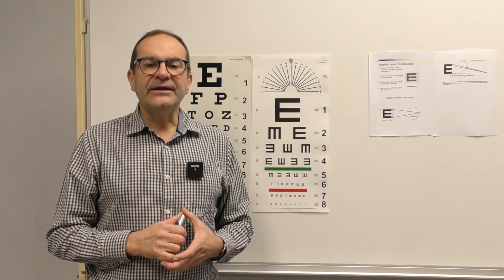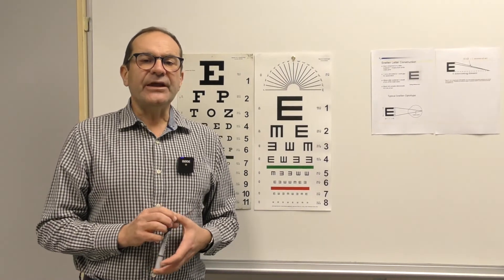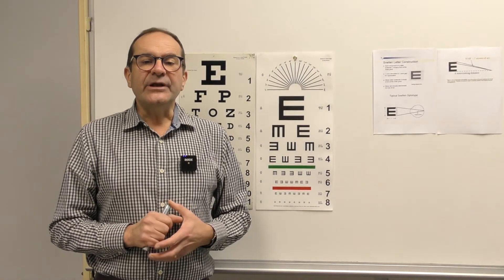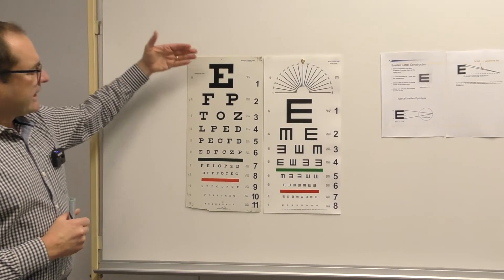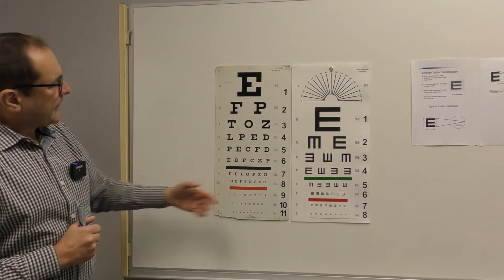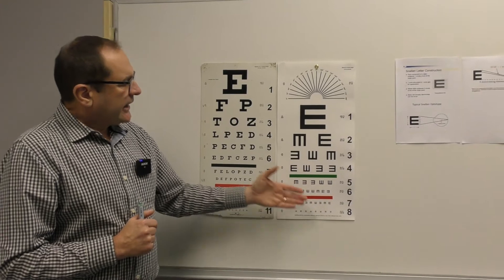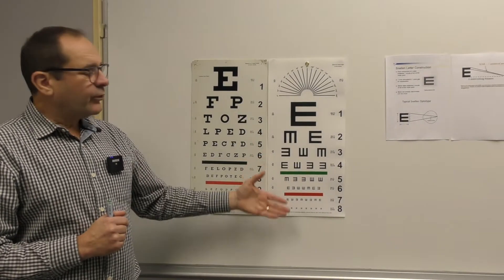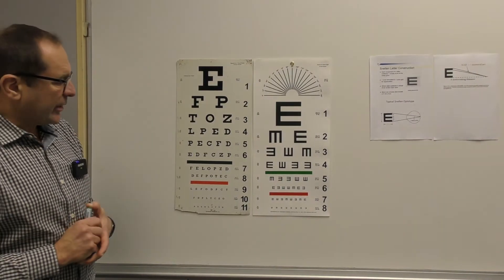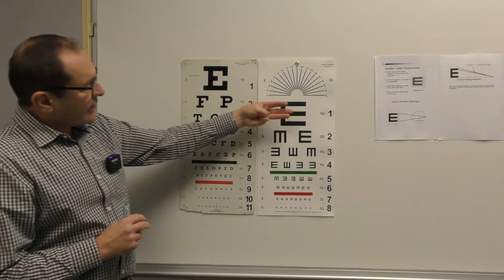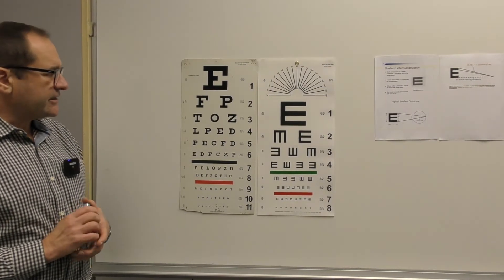Good day. Today I am going to explain the use of the Snellen chart. The Snellen chart is used for determining visual acuity. It is the chart with letters on it, and you also get the E-chart, which is used for children older than 2 years and illiterate people. In that case, we ask them to show in which direction the legs of the E point.